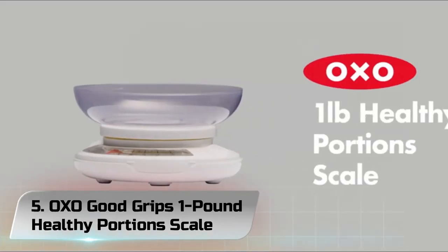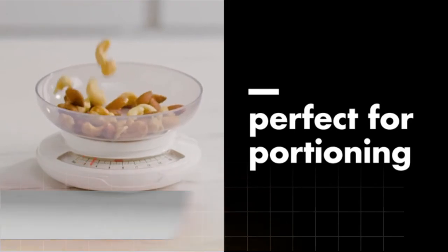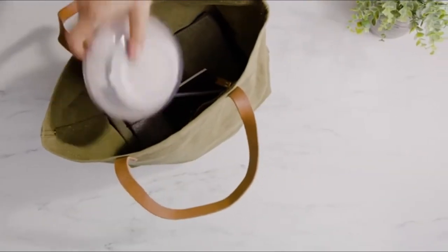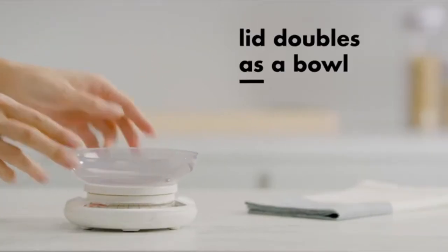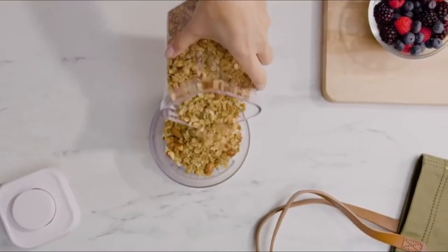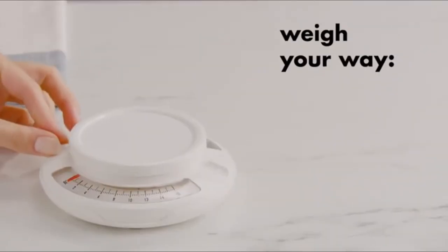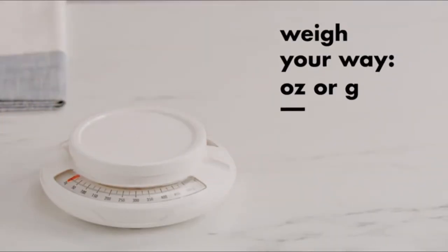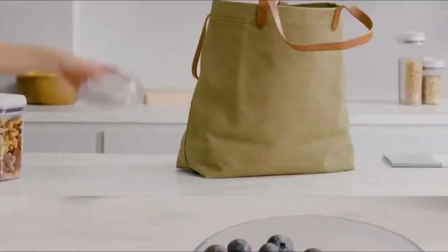Number 5. OXO Good Grips 1-Pound Healthy Portion Scale. If your goal is to shed some pounds or get your portions under control, this analog scale has your name on it. While it only measures up to 1 pound, it has a tare function and both gram and ounce markings for easy measuring, and the platform is bowl-shaped for holding ingredients and foods. The scale is designed to be portable too.